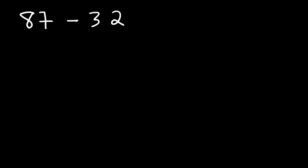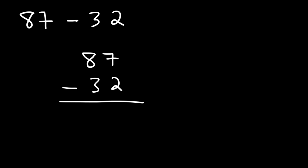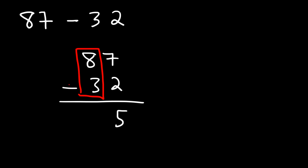Now let's subtract a two-digit number by another two-digit number. For example, what's 87 minus 32? What I would recommend is to line up the numbers and then subtract column by column. So 7 minus 2 is 5, and then 8 minus 3 is also 5. Therefore, the answer is 55.